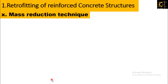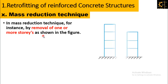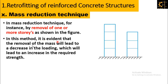The last method of retrofitting of reinforced concrete structures is the mass reduction method. In this technique, for instance, by removal of one or more storeys as shown in the figure, increasing storeys would increase load on the soil, so reducing mass decreases loading on the structure. It is evident that removal of mass leads to a decrease in loading, which in turn leads to an increase in the required strength of the remaining structure.